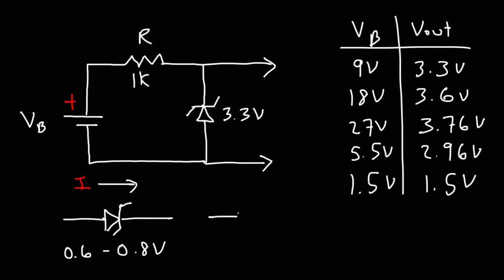In the circuit I have, current is flowing in the opposite direction, so it's in reverse bias mode. The voltage drop is approximately 3.3 volts around the zener current IZ. But as the current changes, the voltage across the zener diode will change.